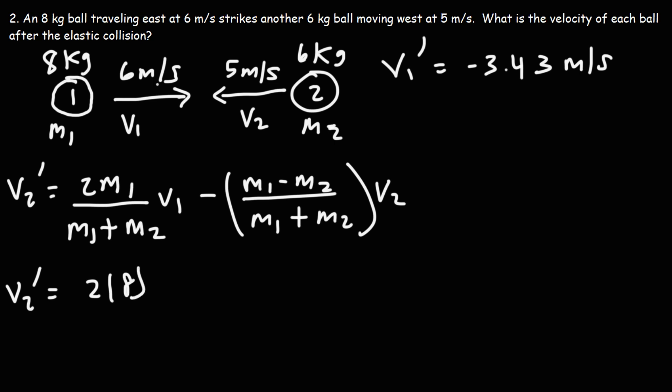So M1 is 8, this is going to be over 8 plus 6, V1 is 6. Here we're going to have 8 minus 6 over 8 plus 6. And V2, just like before, is negative 5.